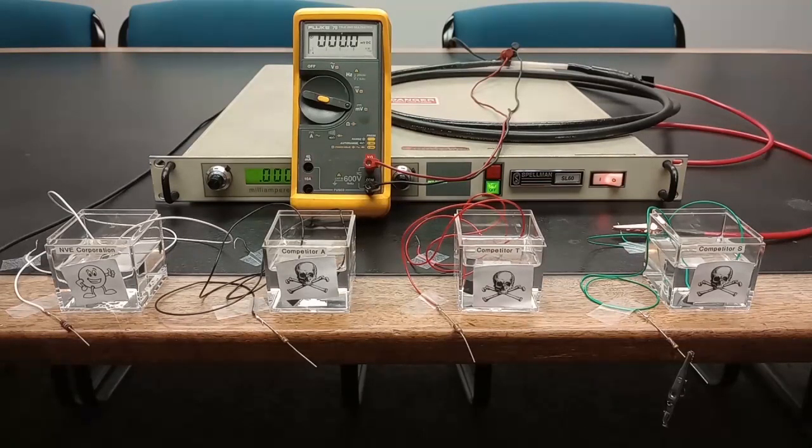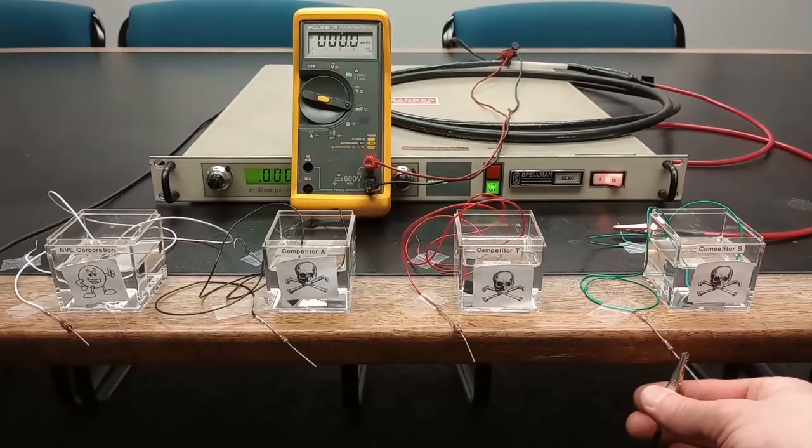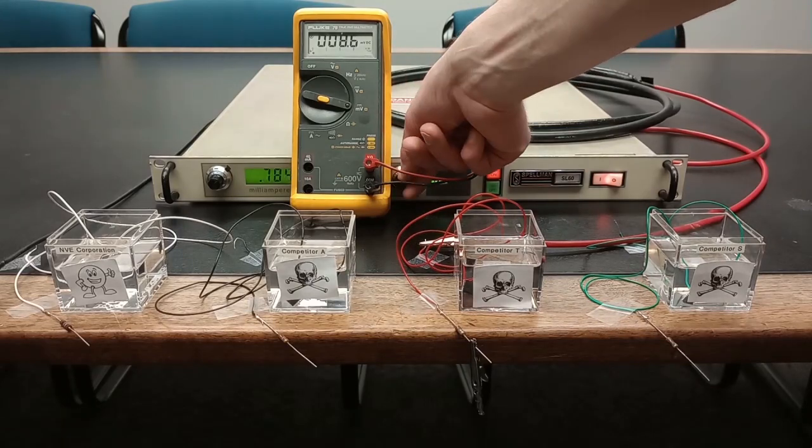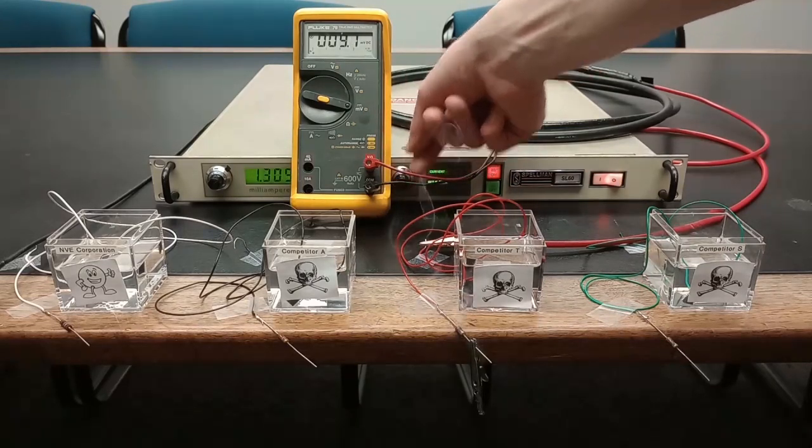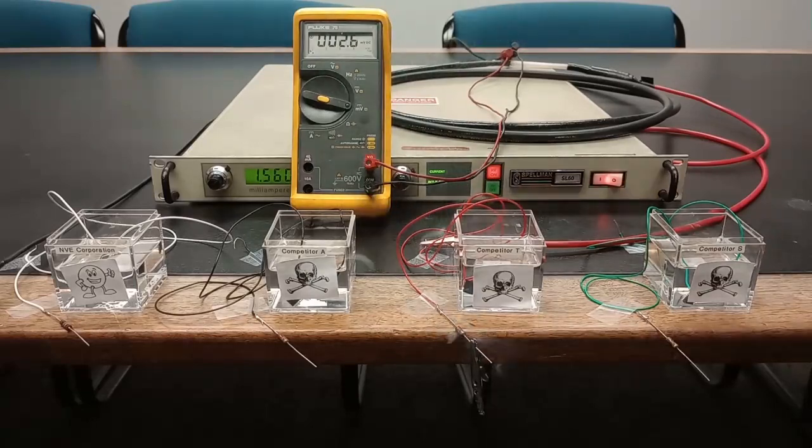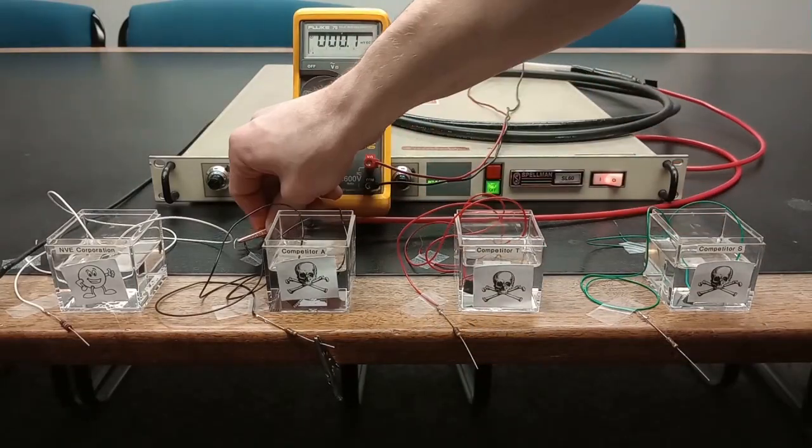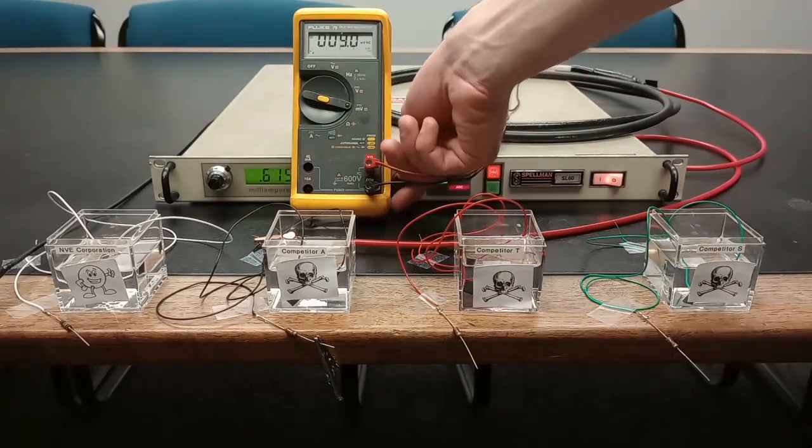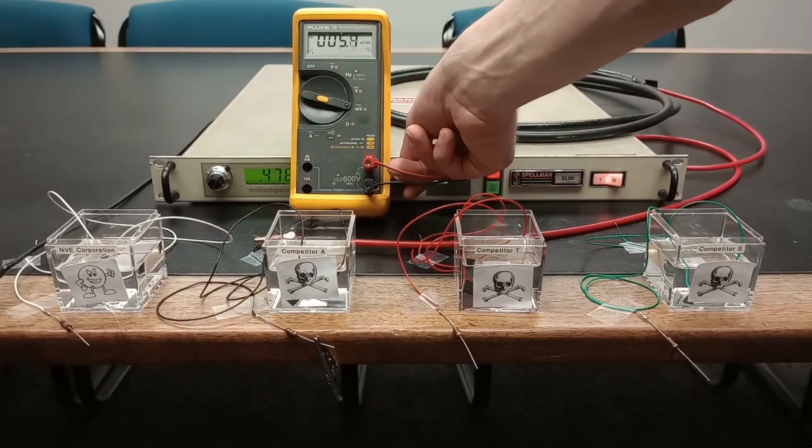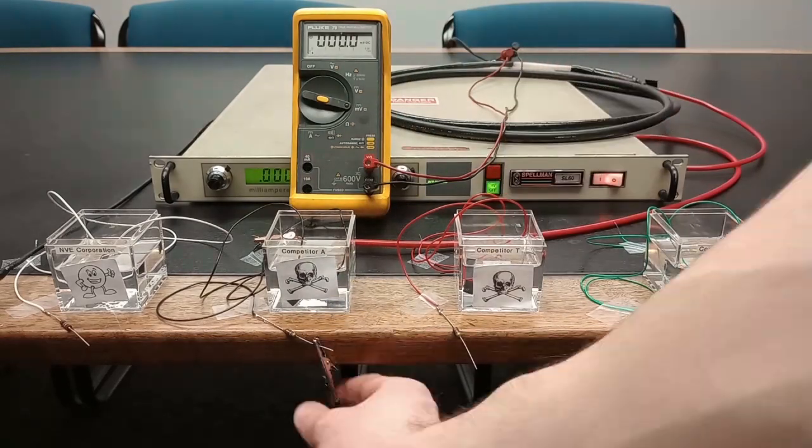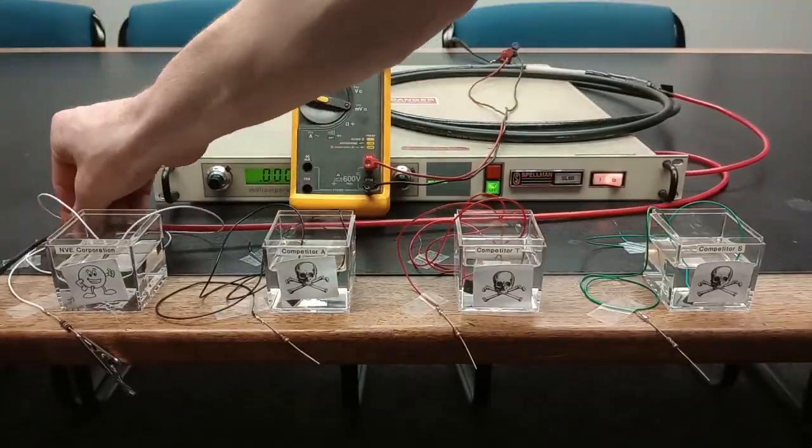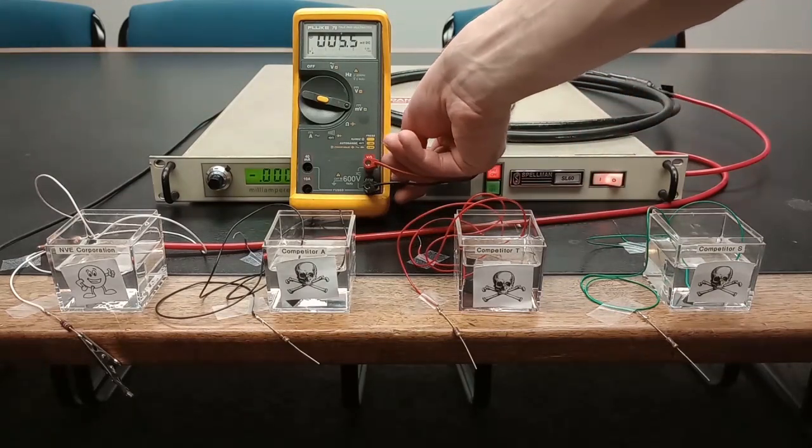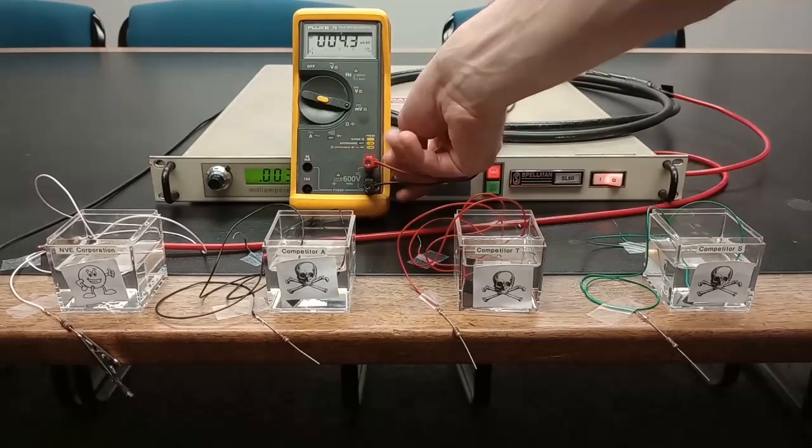Let's go back to the other isolators and verify whether the isolation barriers are intact. No dice for competitor T. Competitor A's isolation barrier is completely shot and unsafe. However the NVE isolation barrier is still intact which means it still passes our safety test.